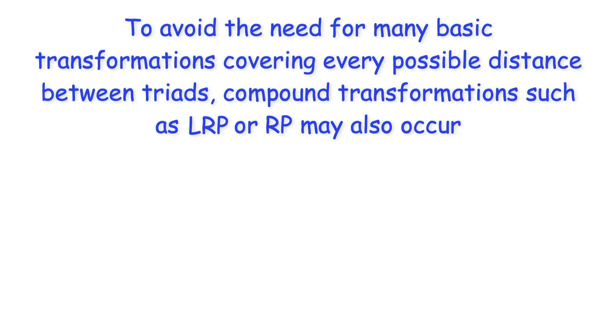To avoid the need for many basic transformations covering every possible distance between triads, compound transformations such as LRP or RP may also occur. While compound transformations may move in either direction, they are always written with the transformation's initial chord on the left and then move towards the right. Compound transformations use the designated transformations to produce a single operation. Using an RP transformation beginning from a C major triad, for example, results in an A major triad.